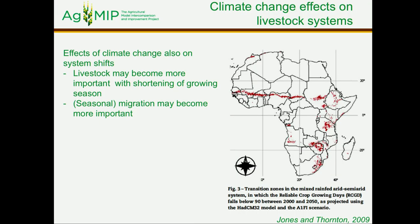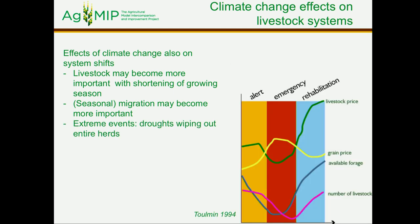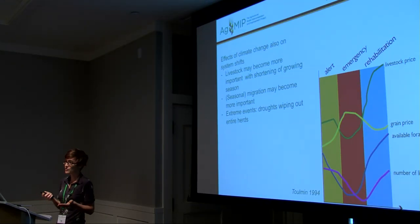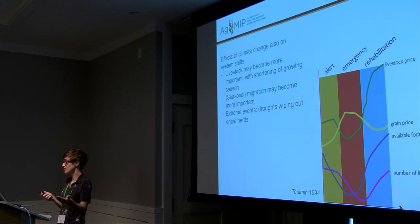There is also the likely effect of system shifts due to climate change. Especially in regions where the growing season will become shorter, livestock might become more and more important. A final element to keep in mind is that extreme events will have a very different impact on livestock compared to crops — droughts, for example, will result in the wiping out of entire herds, and it typically takes years before those herds are built up again.